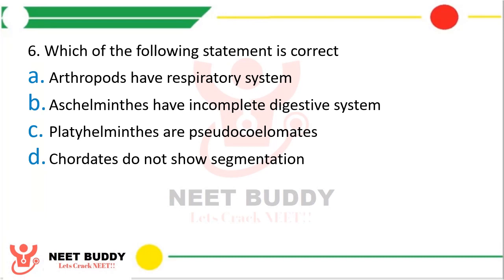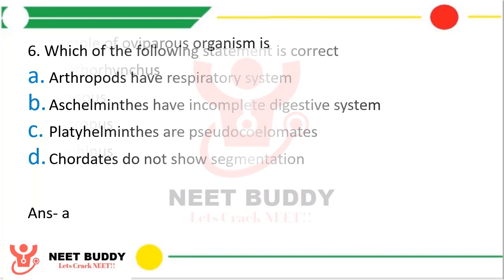Question six: which of the following statements is correct? Option A, Arthropoda have respiratory system; option B, Aschelminthes have incomplete digestive system; option C, Platyhelminthes are pseudocoelomates; or option D, chordates do not show segmentation. The correct answer is option A, that is arthropods have respiratory system.